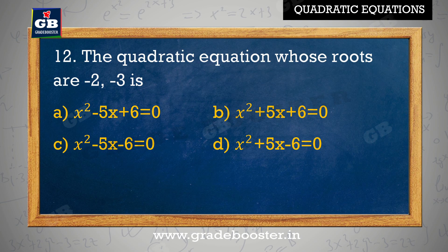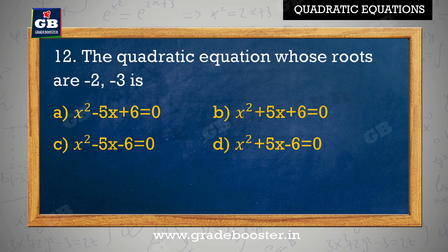Find the quadratic equation whose roots are minus 2 and minus 3: A. x square minus 5x plus 6 equal to 0, B. x square plus 5x plus 6 equal to 0, C. x square minus 5x minus 6 equal to 0, D. x square plus 5x minus 6 equal to 0.